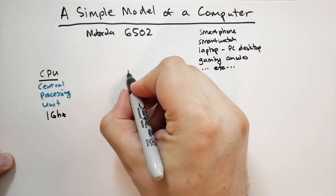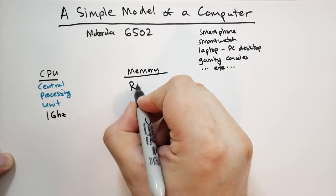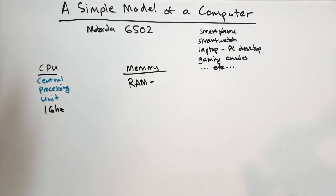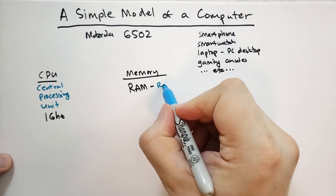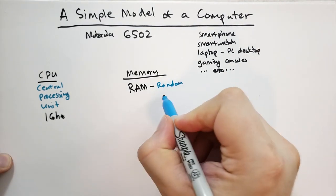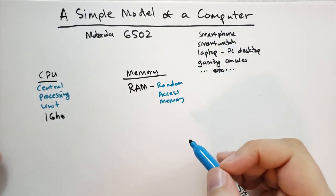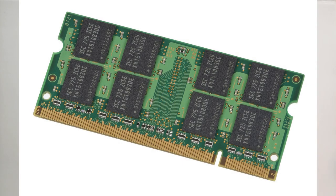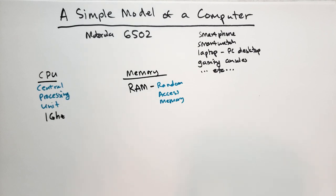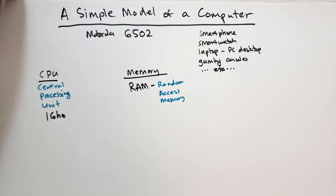Then you have over here, you have the memory. And this is going to include the RAM. RAM stands for random access memory. And the random access memory is another chip or set of chips which you can tell them to store a value and to retrieve a value.